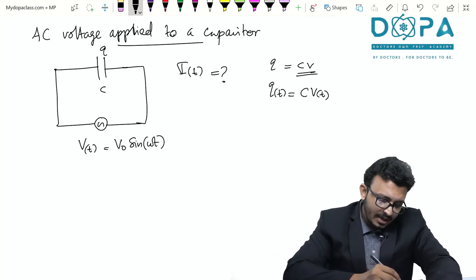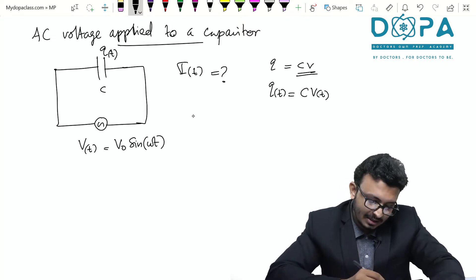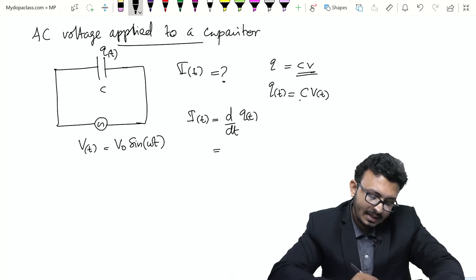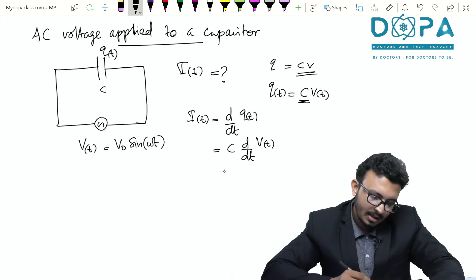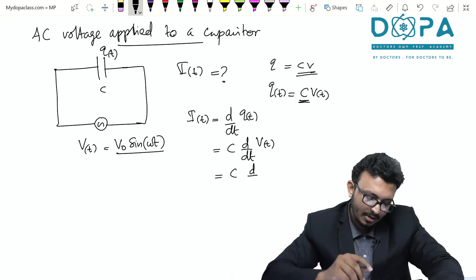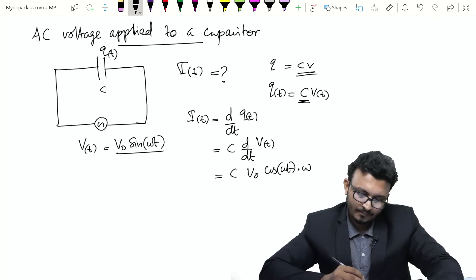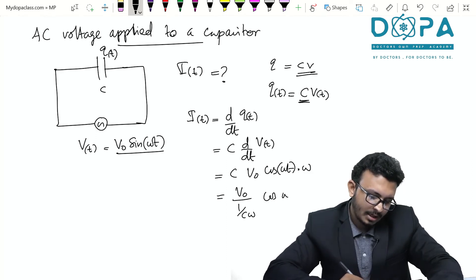Now if the charge is varying with respect to time then we can find the current in a capacitor by differentiating the charge. So I(t) is nothing but d/dt of Q(t). Since the capacitance is a constant this is C into d/dt of V(t). So if you differentiate this V0 sin ωt what we get is C into V0, the derivative of sin ωt is cos ωt into ω. So this becomes V0 / (1/Cω) cos ωt.